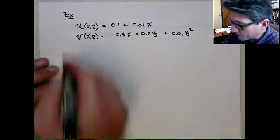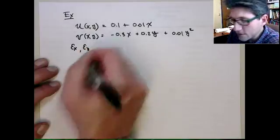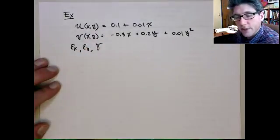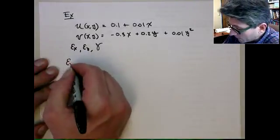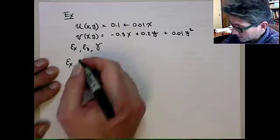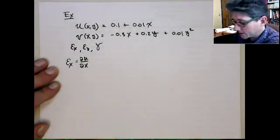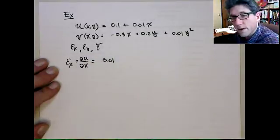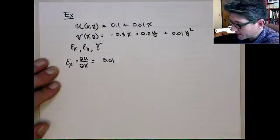Let's compute the stresses in the plane. So let's compute the normal stresses and the xy engineering shear strain. The normal strain in the x direction is the partial of u with respect to x, and so that's just simply 0.01. So it's a constant, not a function of position.